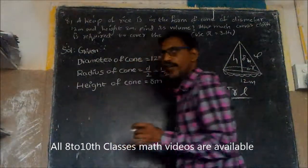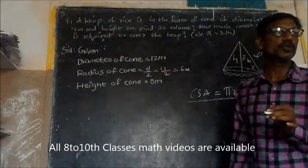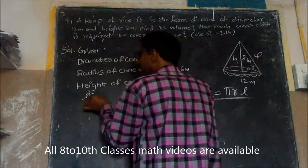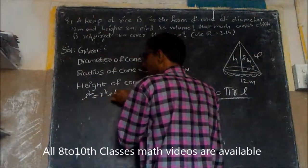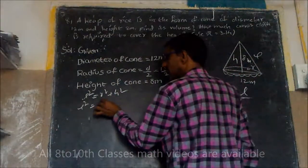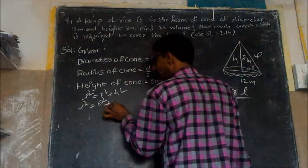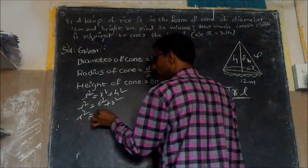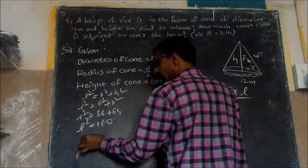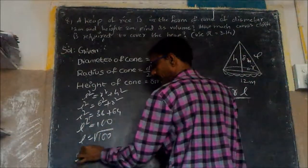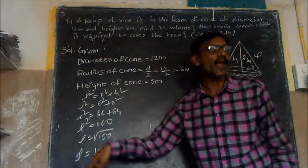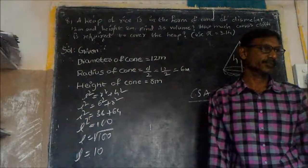First we need to find L to find the curved surface area of the cone. L squared equals R squared plus H squared. So L squared equals 6 squared plus 8 squared, which is 36 plus 64. L squared equals 100, so L equals square root of 100, which is 10 meters.